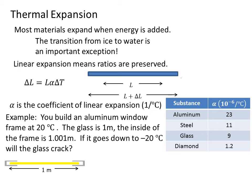As an example, let's say you build an aluminum window frame at 20 degrees C. The glass is 1 meter in length and the inside of the frame is 1.001 meters. If it goes down to minus 20 degrees C, will the frame contract so much that the glass cracks?